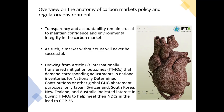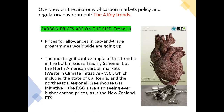Drawing from Article 6, internationally transferred mitigation outcomes (ITMOs) demand corresponding adjustments in national inventories for nationally determined contributions or other global greenhouse gas purposes. Only Japan, Switzerland, South Korea, New Zealand, and Austria indicated interest in buying those ITMOs to help meet their NDCs. The IETA also calls for awareness of key trends and movements in the carbon market environment.